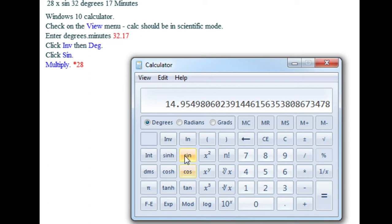First something that looks like a decimal isn't really, then you tell the computer with inverse and degrees that you really mean degrees and minutes. Then you click the function sine or cos or tan, and then you do any multiplying last of all. I hope that helps.